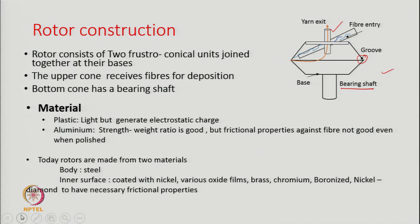Regarding materials: plastic is lightweight but can generate electrostatic charges, so plastic rotors are not made. Aluminium has a very good strength-to-weight ratio, but its frictional properties against fibers are not good even when polished. The problem is that when fibers land on the inner wall of the rotor, they have to slide down towards the groove, and the friction between the fiber and the rotor wall becomes important. Smooth sliding is necessary to ensure the deposited fibers do not get crumbled.